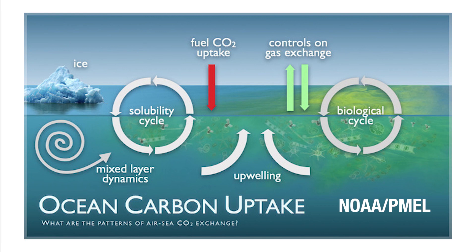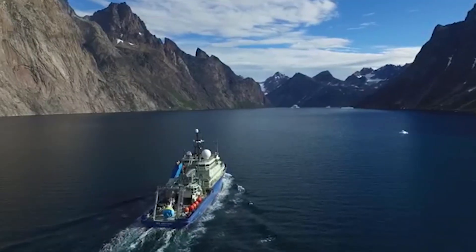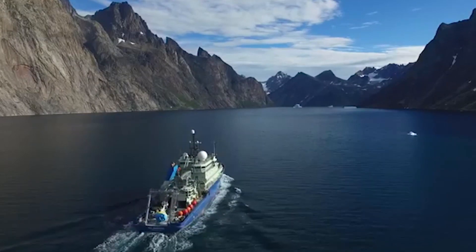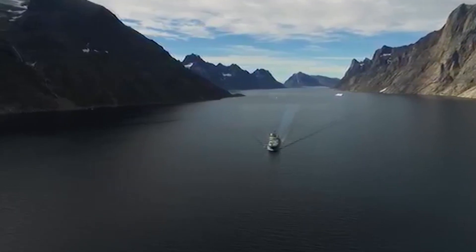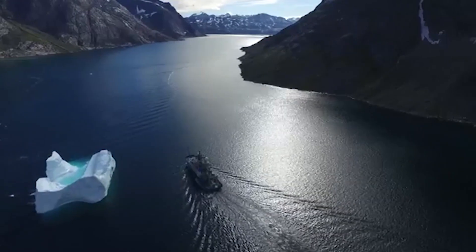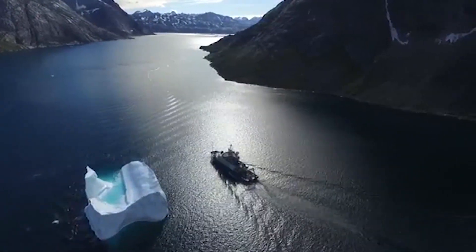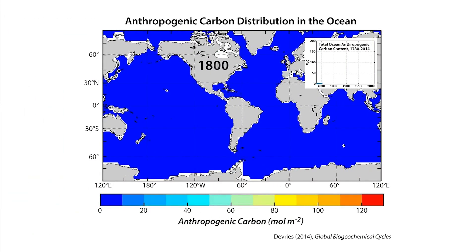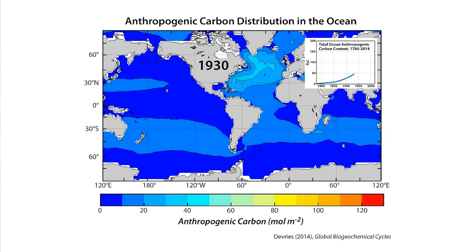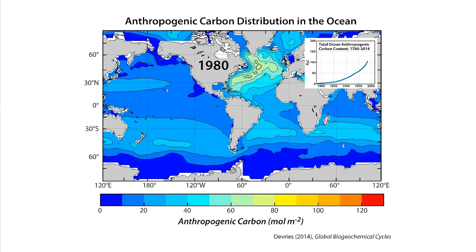Two key processes involved in the ocean carbon cycle are the solubility pump and the biological pump. The ocean solubility pump refers to the ocean uptake of CO2 via abiotic processes. Carbon dioxide uptake occurs in high-latitude regions where cold water has a greater capacity to uptake CO2. These high-latitude regions are windows of communication between the atmosphere and ocean, and carbon dioxide taken up there transits through the deep ocean with residence times of hundreds to thousands of years. Anthropogenic carbon added to the atmosphere pushes this balance further toward uptake, resulting in an overall increase in ocean carbon.